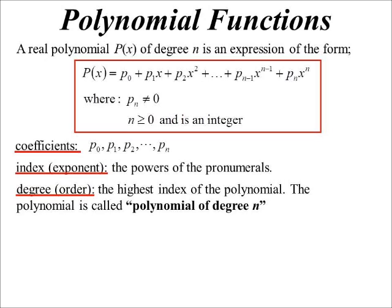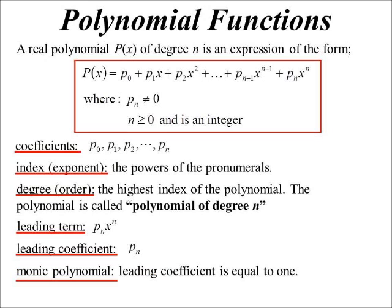The leading term, then, is the term that has that highest power. So Pn X to the n. As opposed to the leading coefficient, that means it doesn't want the algebra. It just wants the coefficient. Make sure you read the question carefully. If they're asking for the leading coefficient, they just want Pn. If they're asking for the leading term, they want the whole term, Pn X to the n. Monic polynomial is where that leading coefficient is 1. So we call that a monic.